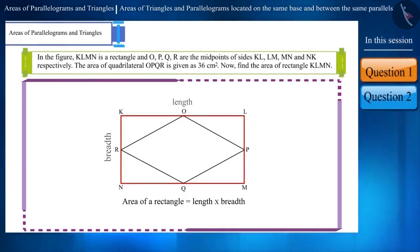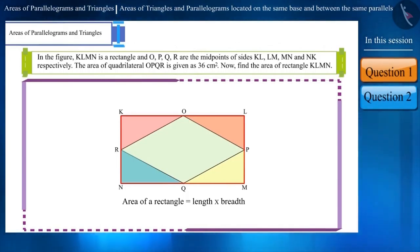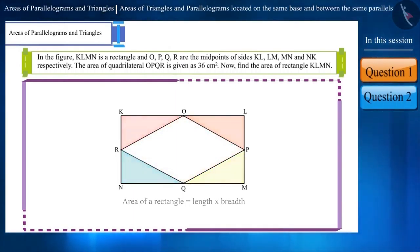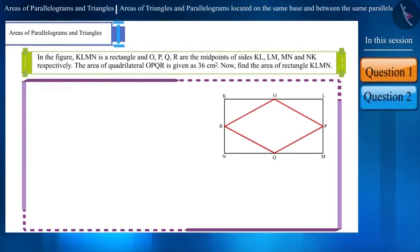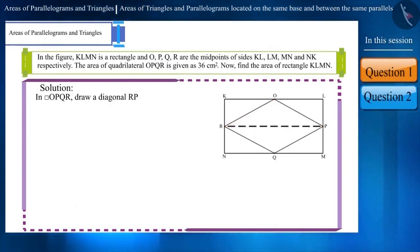But we have not been given its dimensions. We can see that rectangle KLMN is made by combining these parts, so its area will be obtained by adding the area of all these parts. We have information about the area of OPQR, but we do not have information about the area of these parts. If we draw a diagonal RP in parallelogram OPQR, then two congruent triangles will be formed — triangle OPR and triangle PQR.